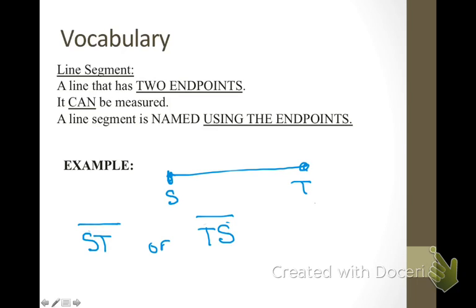A line segment is named using the end points. Notice on a line segment, again, you can go in any order, ST or TS, but we draw a line over the top of it without arrows. That indicates that this is a line segment.